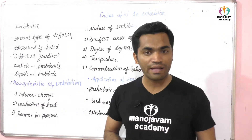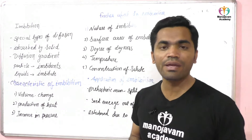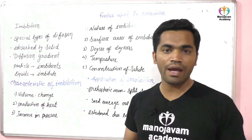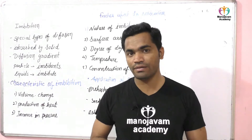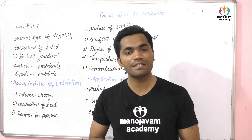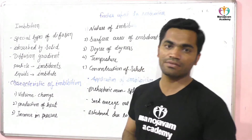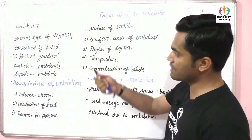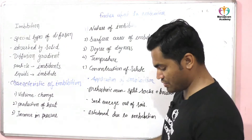Welcome to all of you at Monochrome Academy. We are discussing Chapter 11, which is Transport in Plants. In this chapter, we are now discussing imbibition.